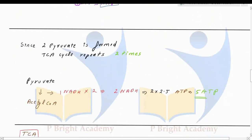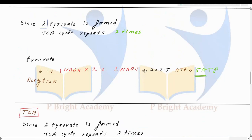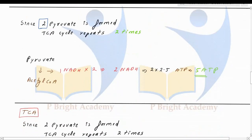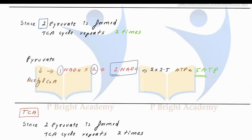Now let's look at the energetics of the TCA cycle. Two molecules of pyruvate are formed and both enter the TCA cycle, so we must multiply every energy molecule by two. When pyruvate is converted to acetyl-CoA, one NADH is formed per cycle. Multiplied by two, we get two NADH, which at 2.5 ATP each gives 5 ATP from this step.